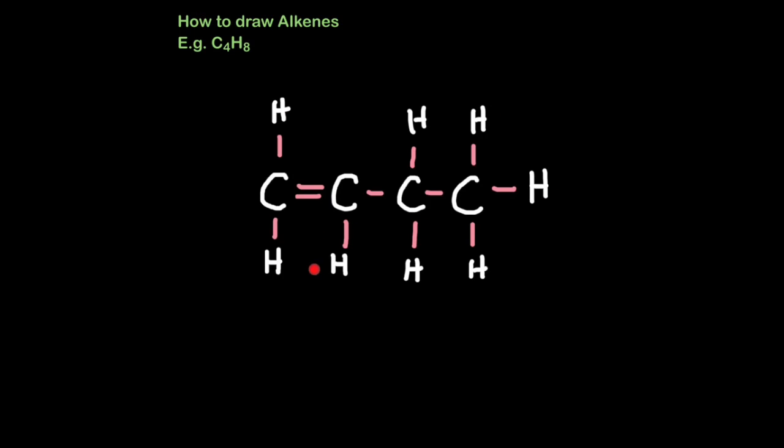Remember: first draw the number of carbons, then do the bonds, the double bond being the first bond between the first two carbons, then complete the remainder of the bonds, and then add the hydrogens afterwards. Don't let where you put this hydrogen panic you. You could put it above here. What's more important is you've got the right number of each type of atom, and they're sharing the appropriate amount of bonds.